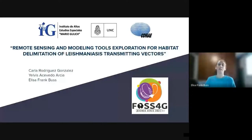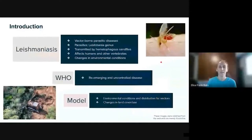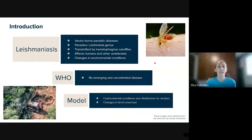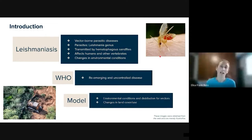Hello, everybody. We are going to speak about remote sensing and modeling tools exploration for habitat delimitation of leishmaniasis transmitting vectors. Leishmaniasis is a vector-borne parasitic disease. The parasites that produce it are from the genus Leishmania. It is transmitted by hematophagous sandflies, similar to mosquitoes, and affects both humans and other vertebrates. The cases of leishmaniasis are related to changes in environmental conditions, such as deforestation or climatic changes.